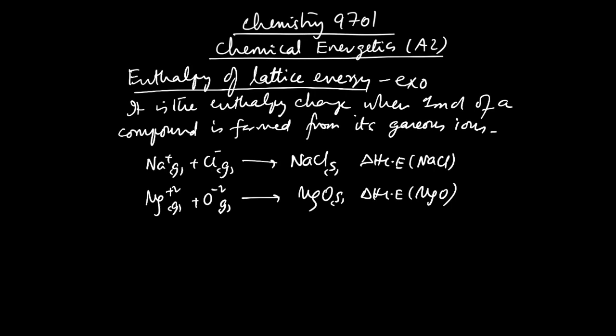One important thing: these gaseous ions react and give ionic compounds, so ionic bonds are being produced. We can say that enthalpy of lattice energy is a measure of the strength of ionic bonding. But remember, it does not measure the strength of a single ionic bond, because there are so many ionic bonds of different strengths in all directions in an ionic lattice. For example, each magnesium ion is surrounded by six oxide ions and vice versa, same for NaCl. So lattice energy is a measure of the overall strength of ionic bonding.